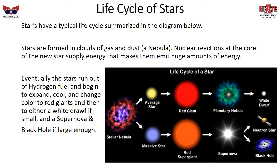Stars have a typical life cycle summarized by the diagram on the right-hand side. Stars are formed with clouds of gas and dust, starting off as a stellar nebula. As they compress together, nuclear reactions at the core of the new star begin supplying energy, making them emit huge amounts of energy. The path then splits depending on the size of the star. If it's an average star like the Sun, as it uses up its hydrogen fuel, it starts to expand and cool, becoming a red giant. Eventually it becomes a planetary nebula, then collapses down to a white dwarf and eventually a black dwarf as it loses the last of its power.